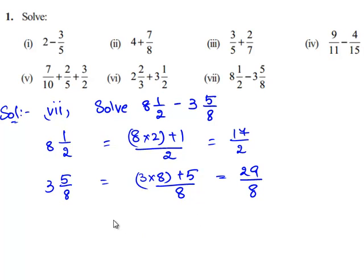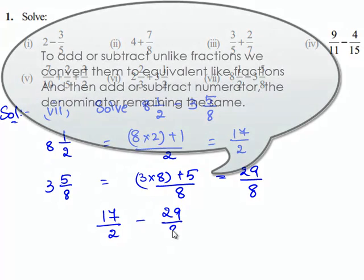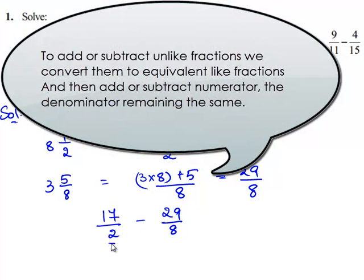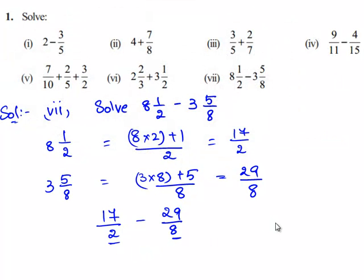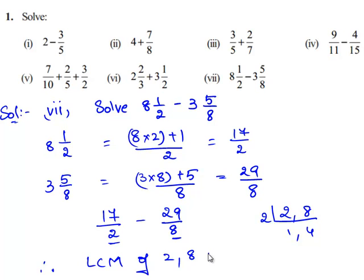So now we need to subtract 17 by 2 and 29 by 8. Since both the fractions have different denominators, we need to find a common denominator. To obtain a common denominator, we shall find the LCM for 2 and 8. Since 2 is a common factor and 2 goes into 8 four times, the LCM of 2 and 8 is equal to 8.